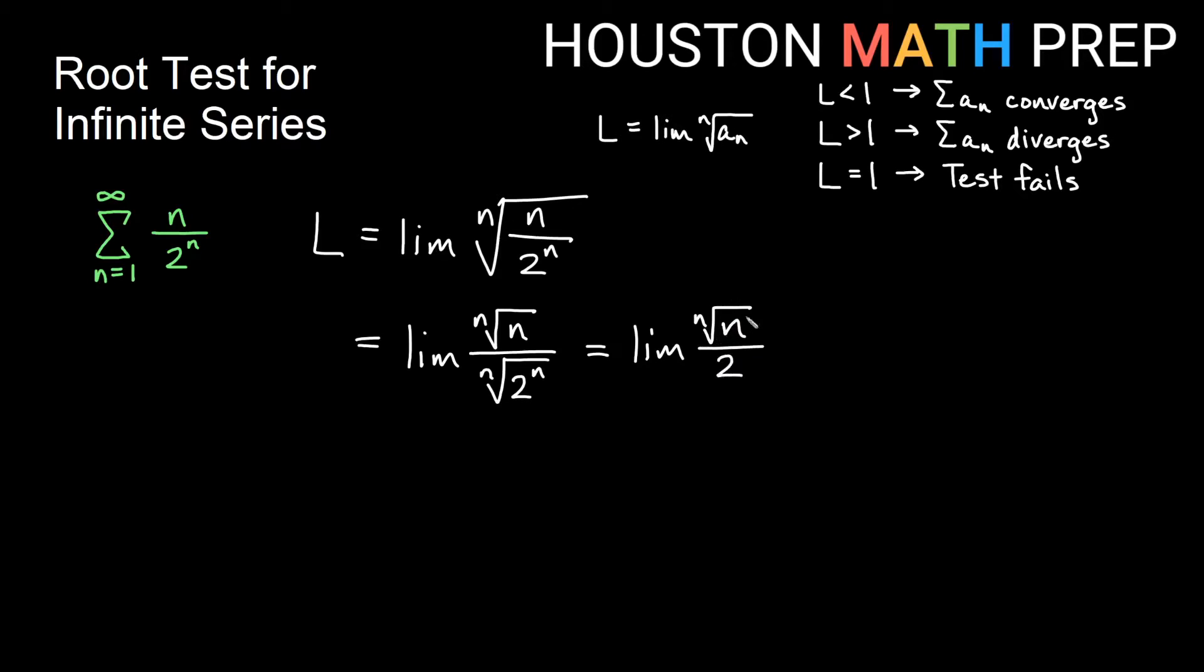And you may remember the limit of the nth root of n is one of our special limits that we encourage you to know so that you can use it in some of these convergence and divergence tests. The limit of this is actually 1 on the top. So we actually get a limit of 1/2. That limit is less than 1, and when we have less than 1 for the limit in the root test, then this original series will converge. So this converges by the root test.